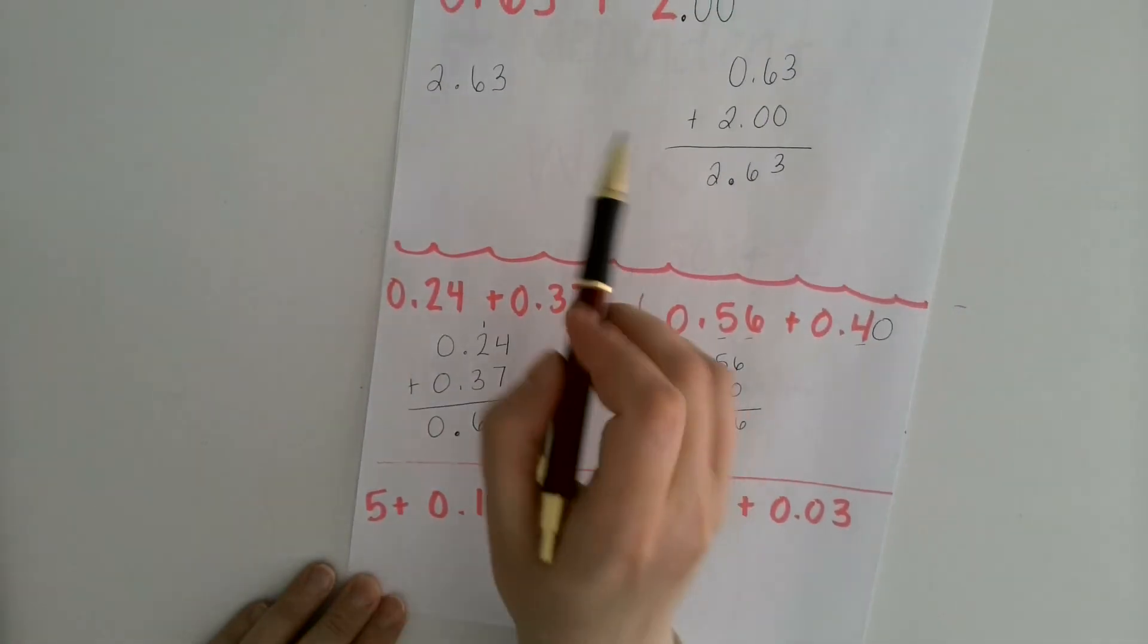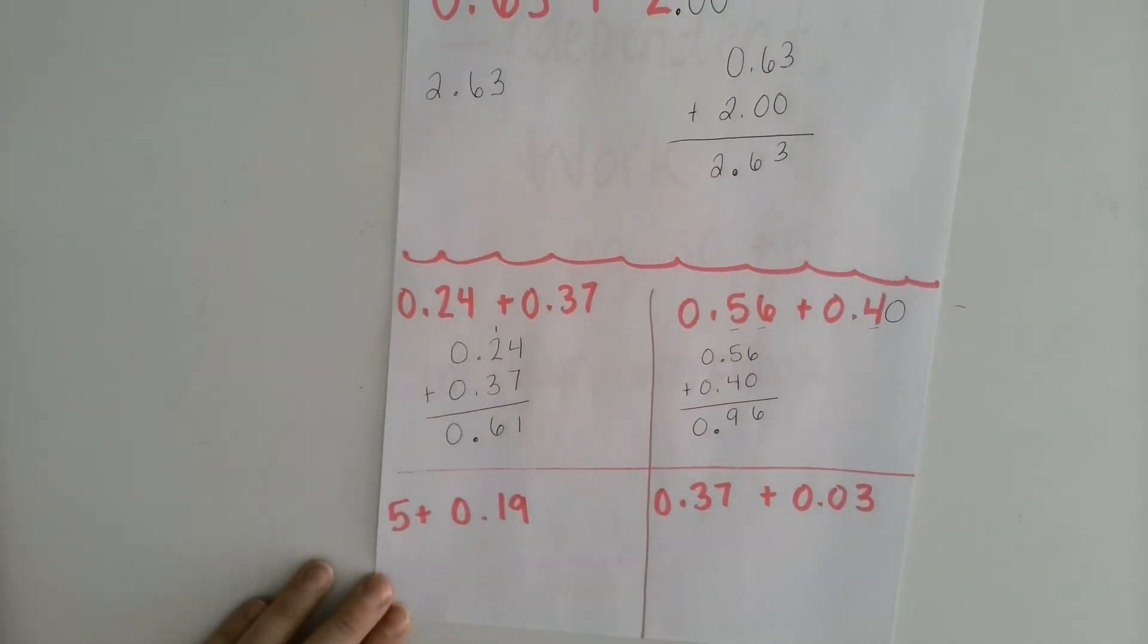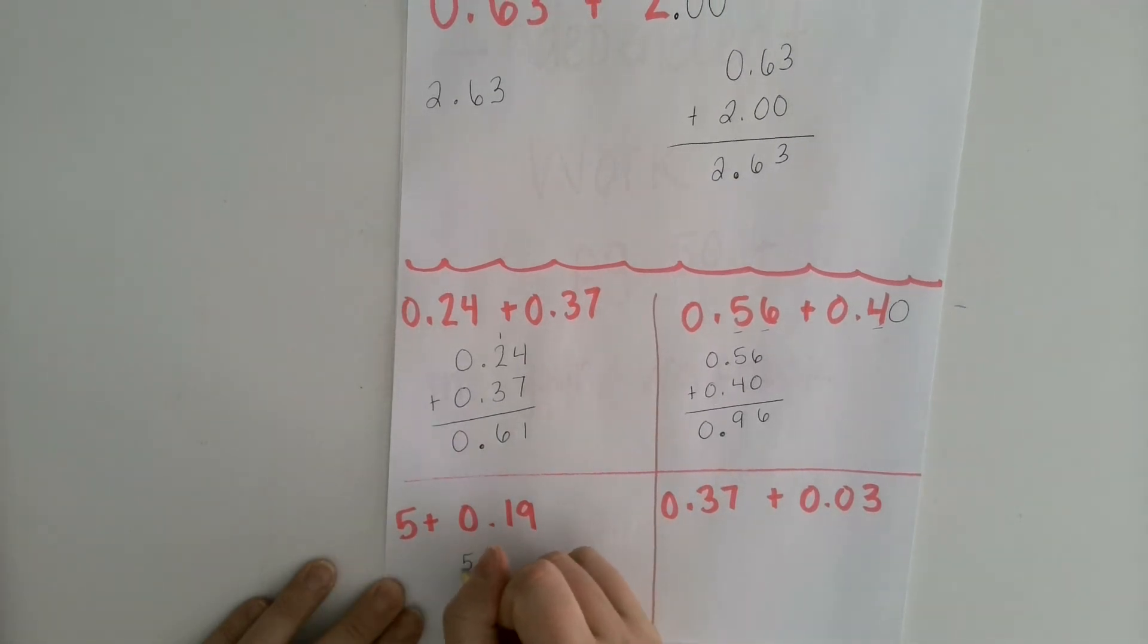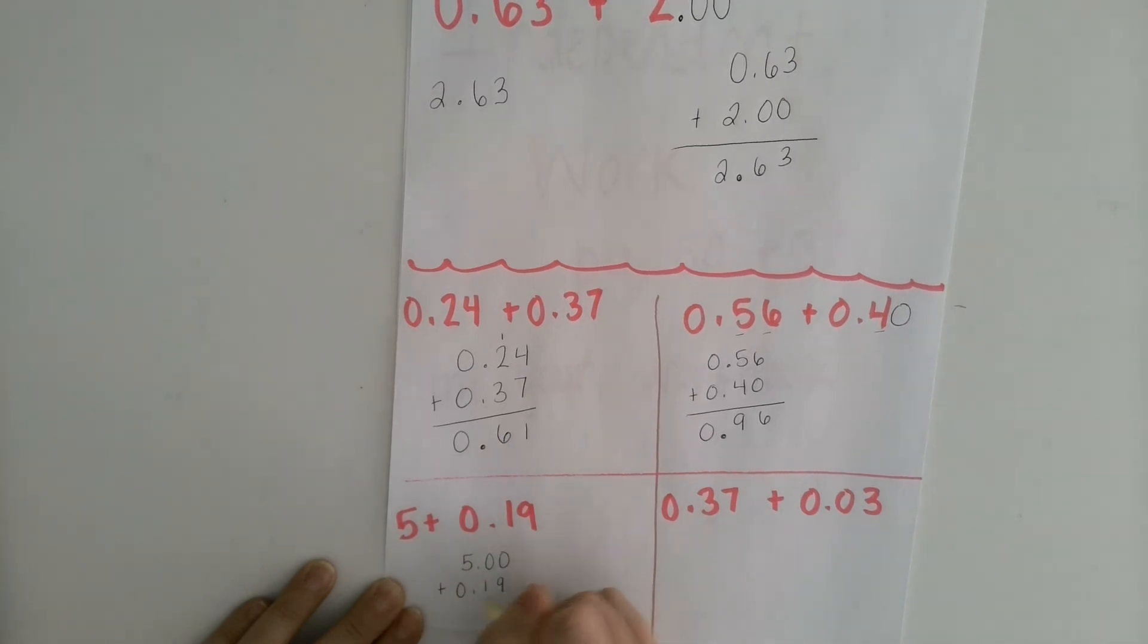This problem is like the one we did up here. So you might have just done it mentally. Or if you wanted to write it out, you might have written 5.00 plus 0.19 and gotten 5.19.